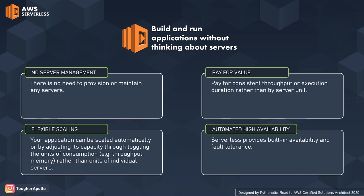With pay-for-value, you only pay for the request or transaction, and AWS charges you only for that — not for the server usage itself. You pay for every consistent throughput or execution you make. The third capability is flexible scaling — your application can be scaled automatically by adjusting its capacity through toggling units of consumption rather than individual server units. With increased demand or traffic it will automatically scale up or down based on requirement. Automated high availability provides built-in availability and fault tolerance, so even in the event of failure you won't notice any disruption.